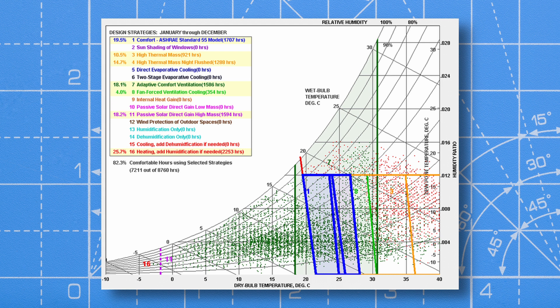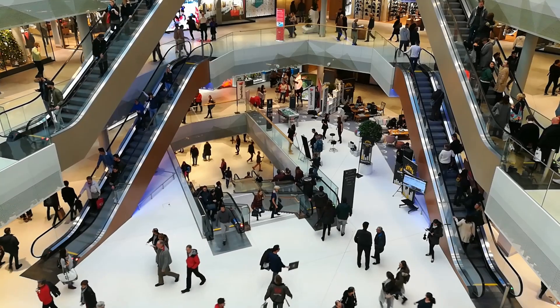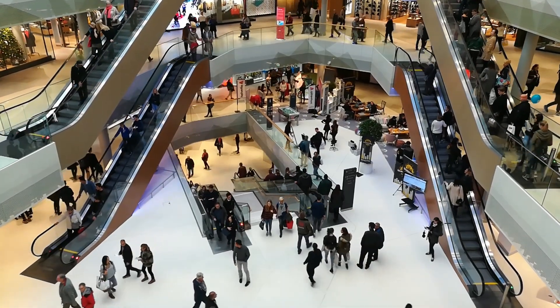But here is the catch. The bioclimatic chart has some significant limitations. It relies on simplified assumptions about how buildings behave, failing to account for factors such as internal heat loads, transient conditions, and ventilation.